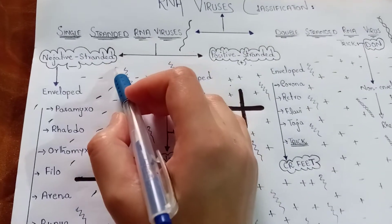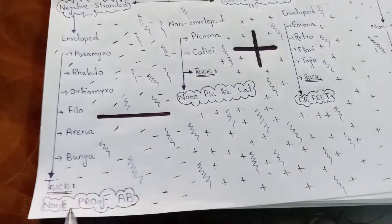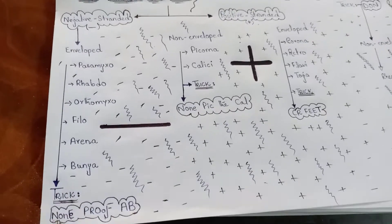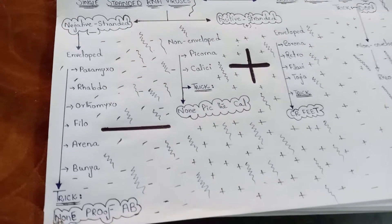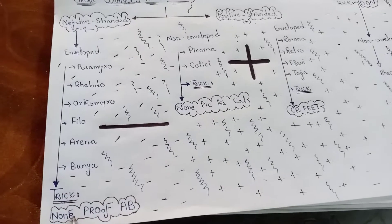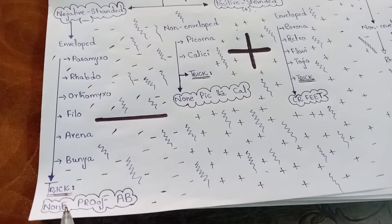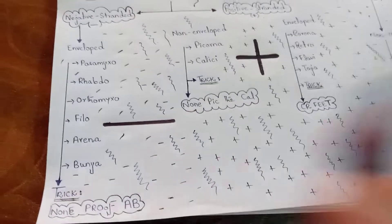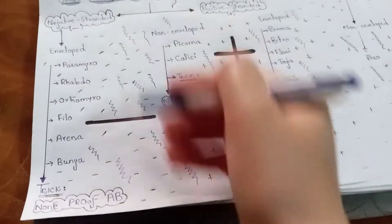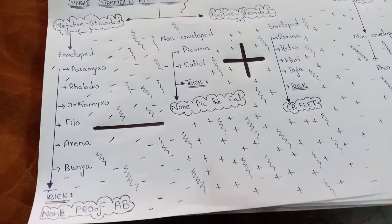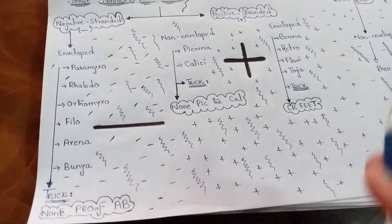First we are going to talk about the negative stranded RNA viruses. For that I have brought a trick: 'NON PROOF EB.' The 'N' denotes negative strand and the 'E' denotes enveloped. One important point: negative stranded RNA viruses are always enveloped — there are no non-enveloped negative stranded RNA viruses.